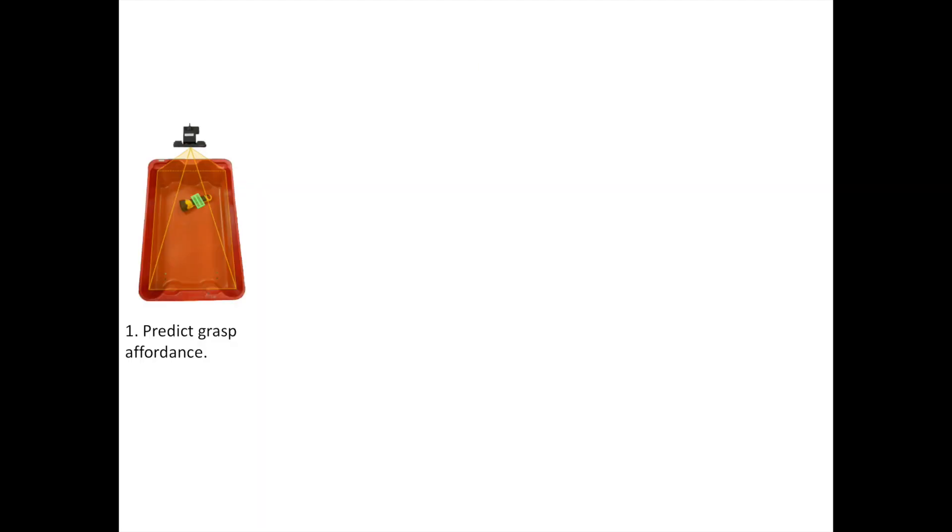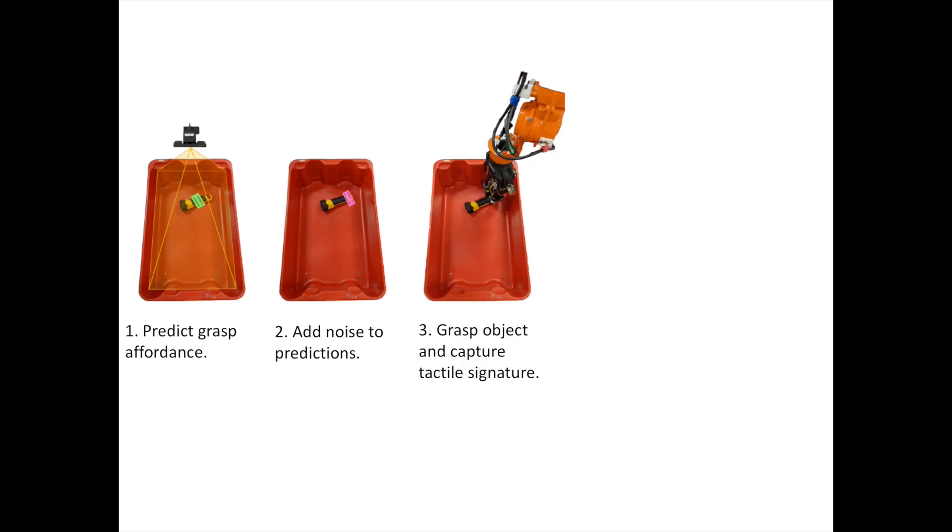In the approach taken in this paper, we first find an antipodal grasp affordance computed from the 3D point cloud. Second, we add noise to the predictions to emulate errors or deficiencies in the grasp planner. Third, the robot descends to the planned grasp, closes its fingers, and records the tactile imprints.